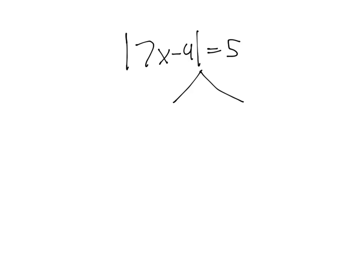And the first equation is going to be 7x minus 4 equals 5. So it's just the original equation with the absolute value symbol removed.